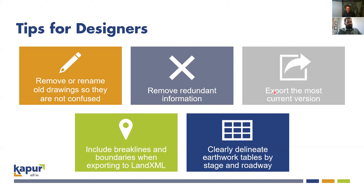We're going to want to export the most current version of what we have. As designers, we go through many design iterations to get to the final product. Be sure to have renamed or removed old versions and then export the most current one — this is especially important when it comes to surfaces and profiles. Include break lines and boundaries when exporting to LandXML so that, as Dean was talking about, he can take those individual break lines and build a surface. If anything needs to be changed or a spike needs to be removed, you can remove just that spike instead of having to recreate everything.